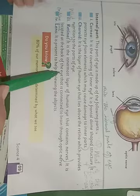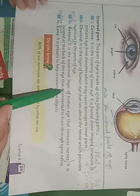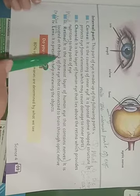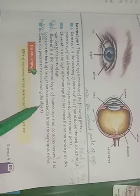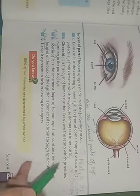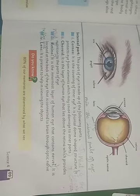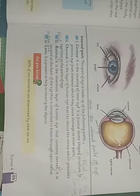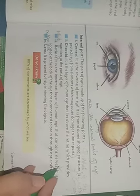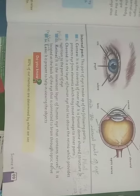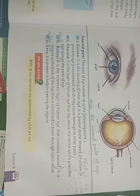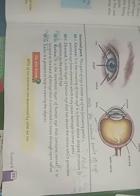What is the retina? It is the innermost layer of the human eye. It contains receptors that convey messages to the brain.